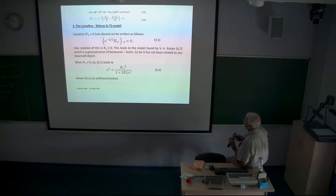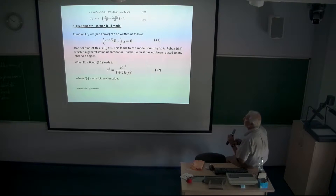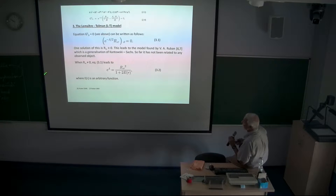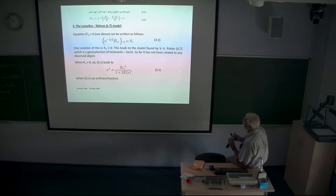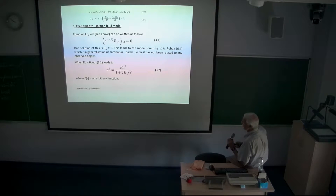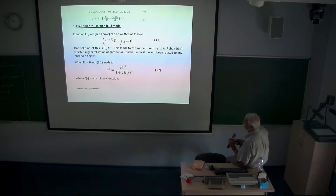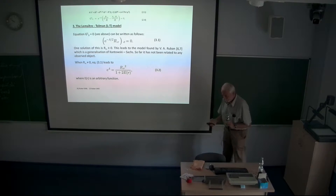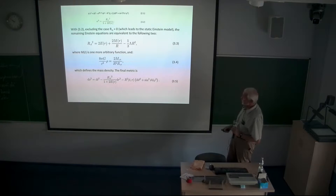One solution of this equation is that the derivative of capital R with respect to the coordinate R is zero. This leads to a model first found in 1938, but the author immediately said it has no meaning and should be ignored. Rubin found it again in 1968 — it's a generalization of the Kantowski-Sachs class with very interesting physical properties, but so far it has not been related to any observed object. When this derivative is non-zero, the solution has a form where E is an arbitrary function, which is a useful way of writing an integration constant.